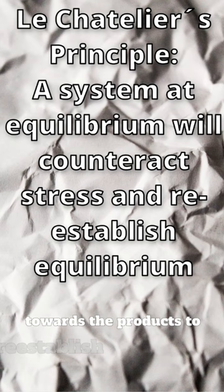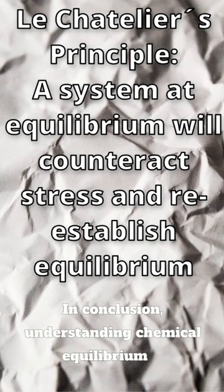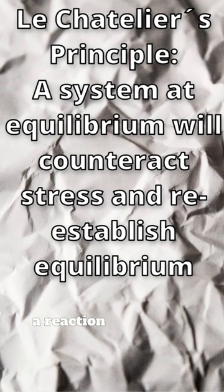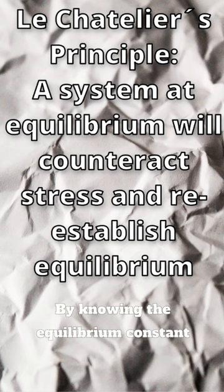In conclusion, understanding chemical equilibrium is crucial in the study of chemistry. It allows us to predict the direction of a reaction and control the yield of products. By knowing the equilibrium constant and Le Chatelier's principle, we can manipulate the equilibrium of a chemical reaction to our advantage.